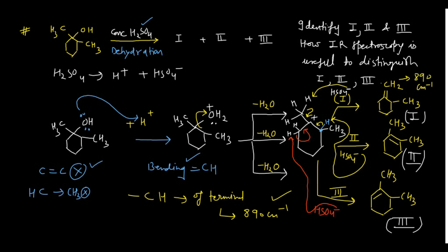For product 2, the alkene is perfectly tetrasubstituted — there is no hydrogen attached to either carbon of the double bond. Because there is no vinyl hydrogen, there is no absorption at 890 cm⁻¹. That band is absent for the tetrasubstituted alkene. This is how you can differentiate product 1 from product 2 using IR spectroscopy.